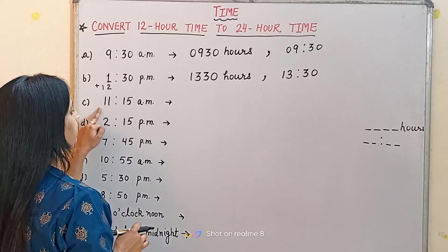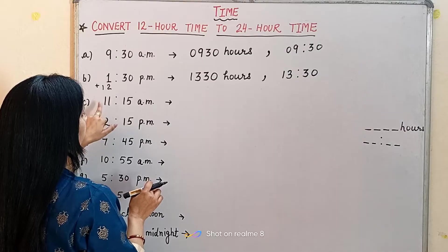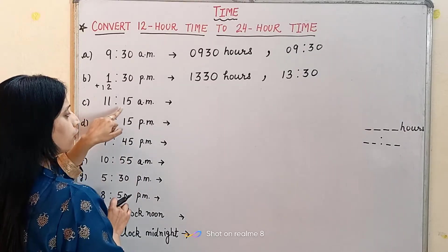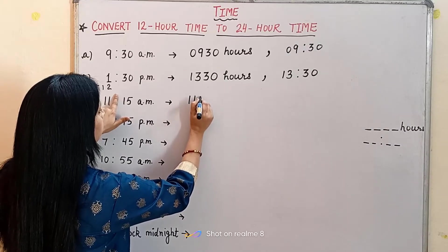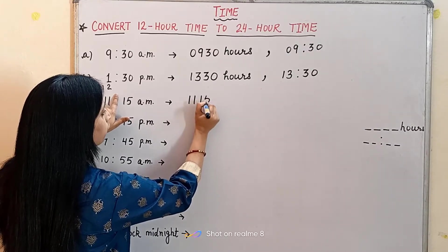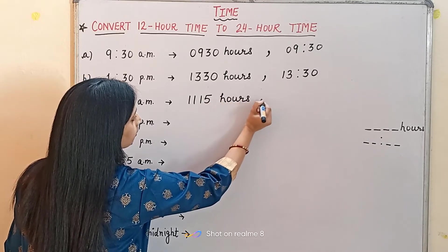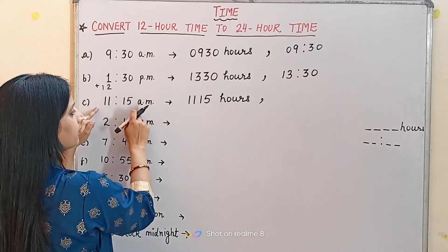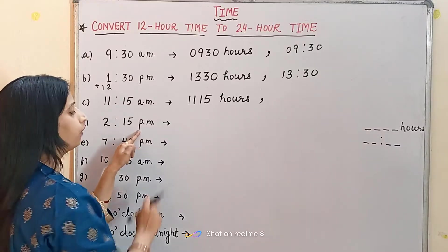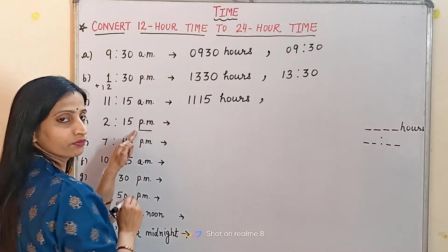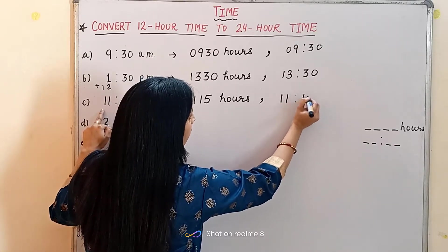Similarly we will do the third one. It is 11:15 AM. The time is already given in 4 digits, so we simply remove the colon and write 1115, then write 'hours'. It is AM, so there will be no change — we will not add 12. The second way: we write 11, put the colon, and write 15. No AM or PM will come here.